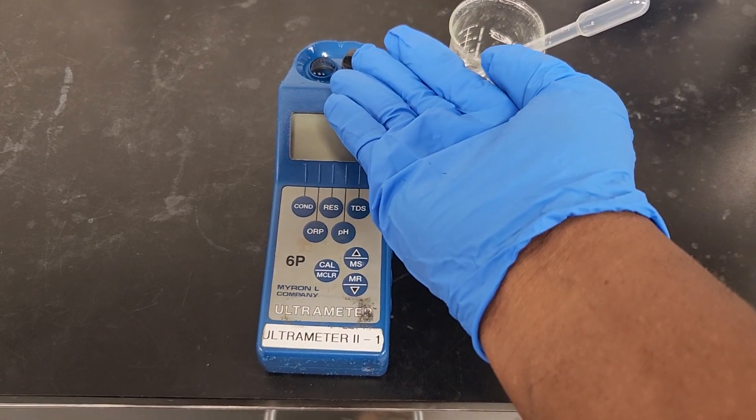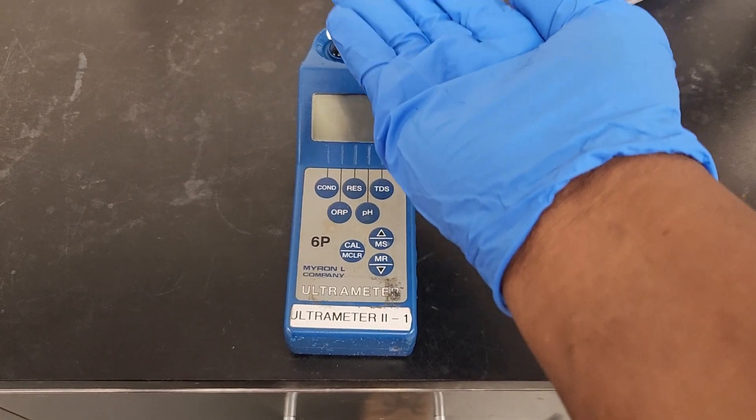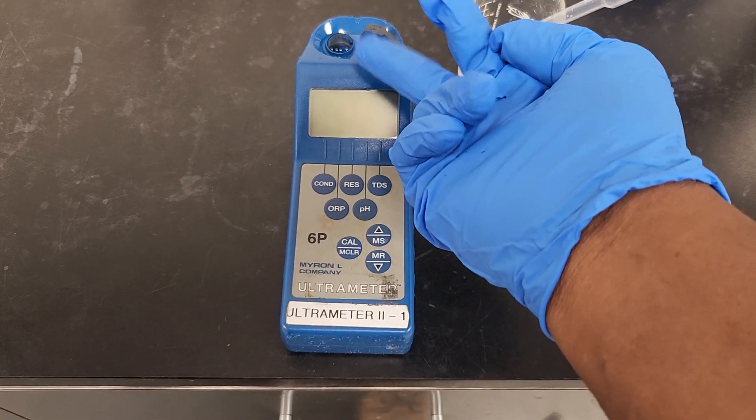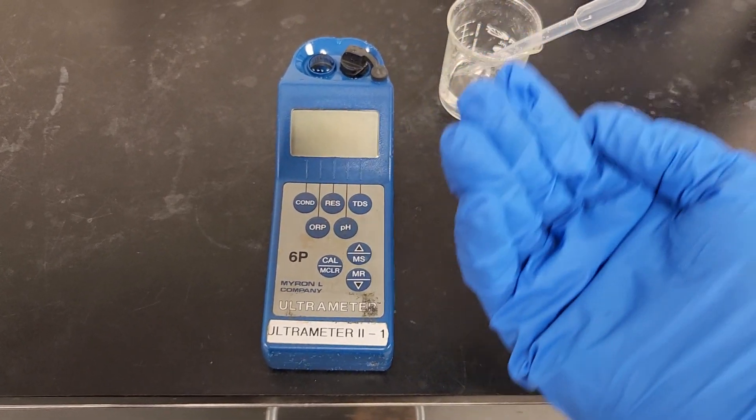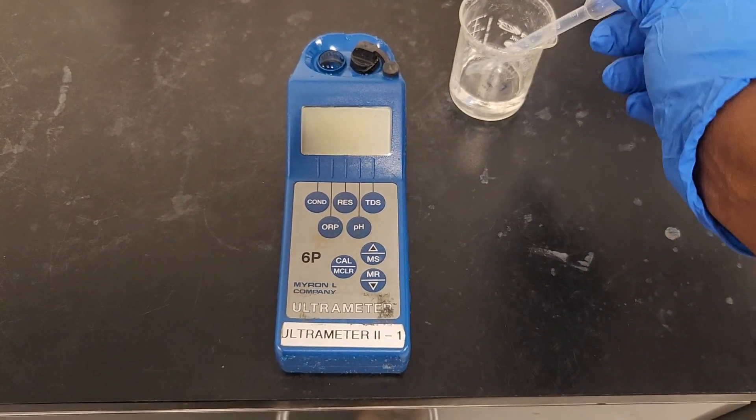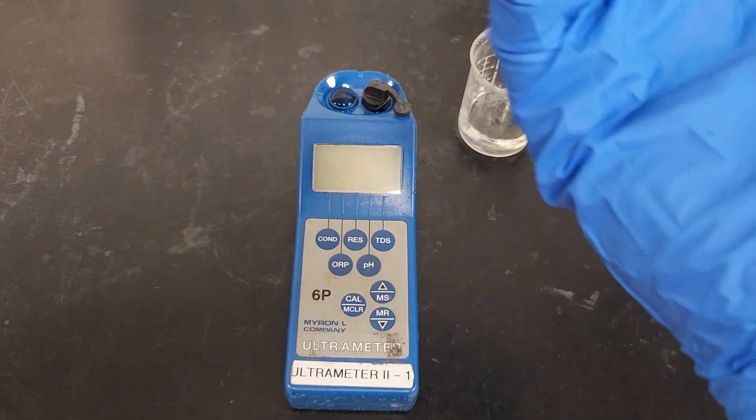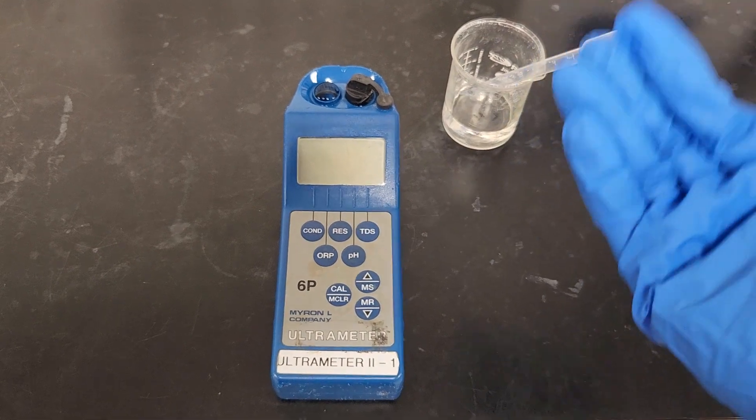So actually before this video, I mean before I started videoing, I've already done the cleaning. So what I do is collect this pipette, put it inside, fill it up, discard it, do it three to four times and it's ready to measure your conductivity and your total dissolved solid.